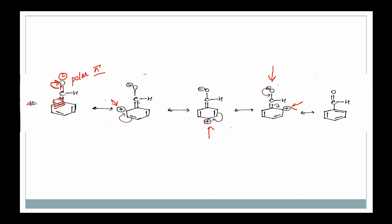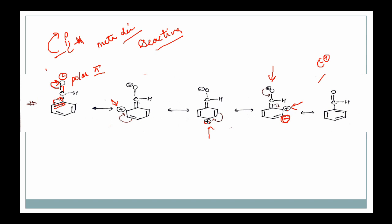Due to the CHO group, the ortho and para positions have decreased electron density. So the electrophile will NOT prefer ortho and para — it will go to the meta position, which is relatively more electron rich. That is why we call the CHO group a meta-directing group. This CHO group — and similarly any C=O group — is a meta-directing group. It is also a deactivating group.